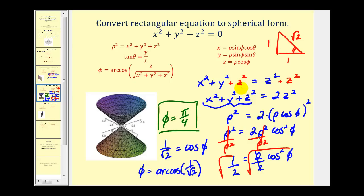So this one was quite a bit of work and it's a little bit messy, but it does come out to phi equals pi over four.